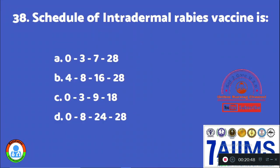Question 38: The schedule for intradermal rabies vaccine is: Option A: 0, 3, 7, 28 days. Option B: 4, 8, 16, 28 days. Option C: 0, 3, 9, 18 days. Option D: 0, 8, 24, 28 days. The intradermal rabies vaccine is given on day 0, day 3, day 7, and day 28.